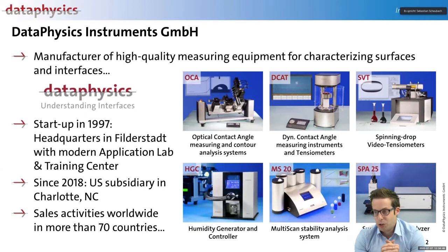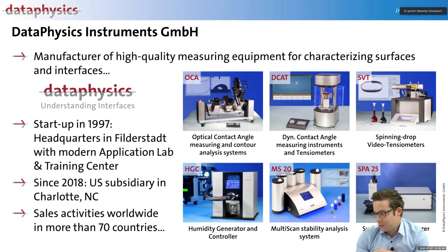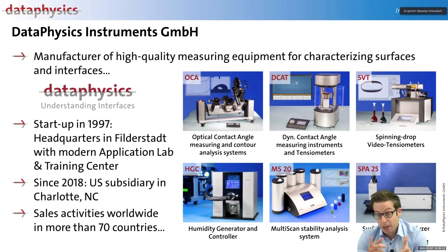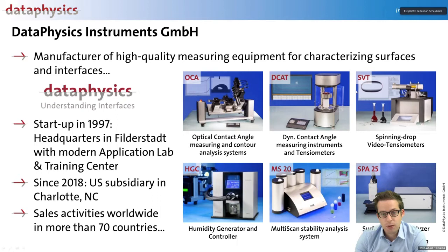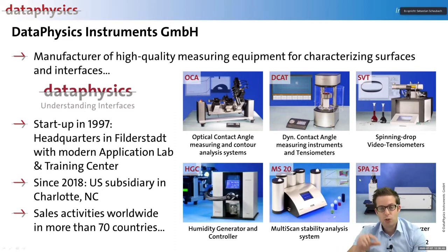A very short overview: we are located in Germany, founded a bit more than 20 years ago, with subsidiaries in the United States and India, and represented basically worldwide. Our bread-and-butter business is optical contour analysis systems to characterize solid surfaces and also liquids. We also do classical tensiometers, spinning drop tensiometers for extremely low interface tensions, humidity generating systems, stability analysis systems for dispersions and suspensions, and a surface profile analyzer with extremely high resolution in the Z direction.